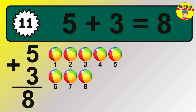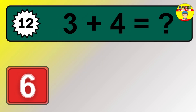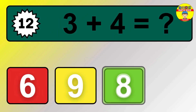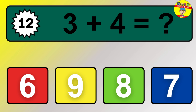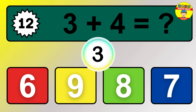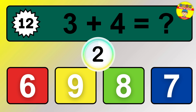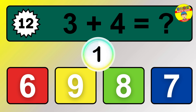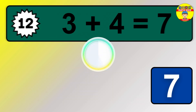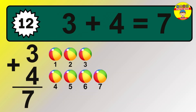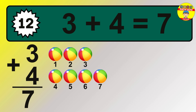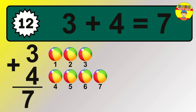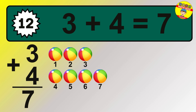1, 2, 3, 4, 5, 6, 7, 8. So the answer is 3 plus 4 is 7. Let's count it. 1, 2, 3, 4, 5, 6, 7.